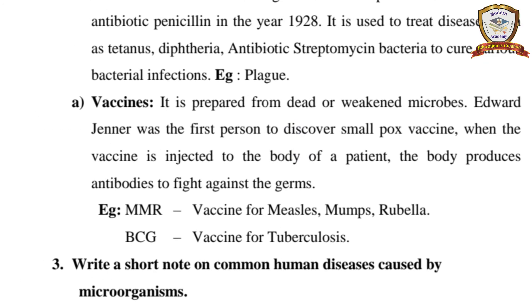Vaccines are prepared from dead or weakened microbes. When a vaccine is injected into the body of a patient, the body produces antibodies to fight against the germs. Examples: MMR — vaccine for measles, mumps, and rubella. BCG — vaccine for tuberculosis.